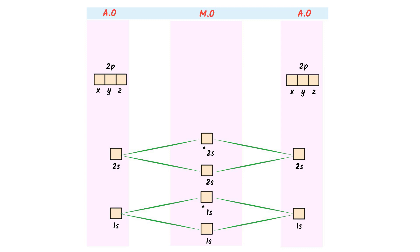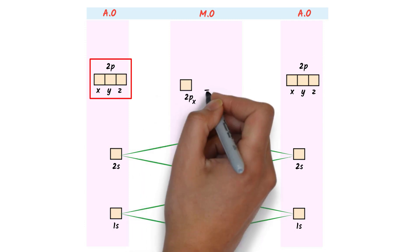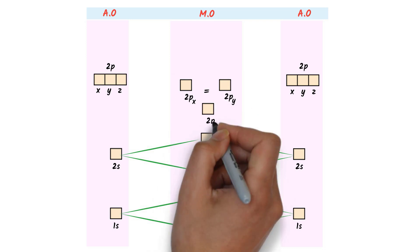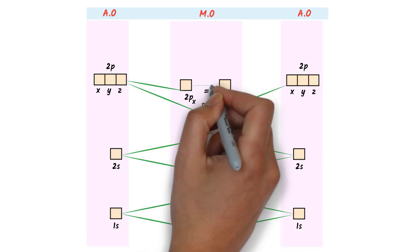Lastly, these three atomic orbitals of 2p and these three atomic orbitals of 2p combine together to form six molecular orbitals. I write these three bonding molecular orbitals. Remember that 2px and 2py have the same energy, so I write 2px equal to 2py on the same line. I write 2pz below them. Remember that these three are bonding molecular orbitals.